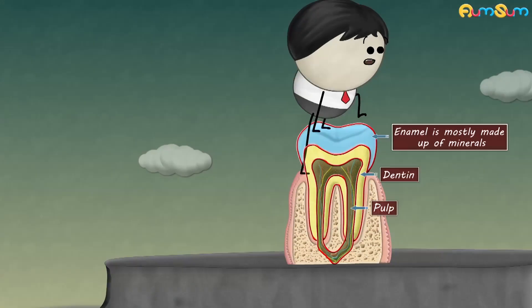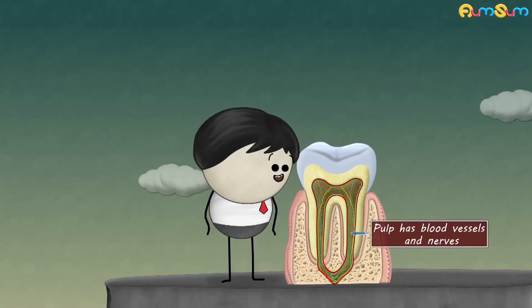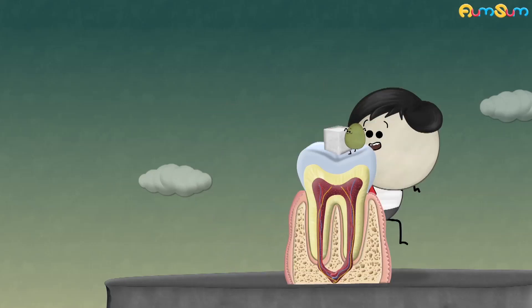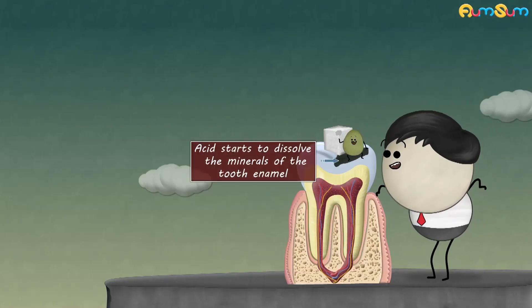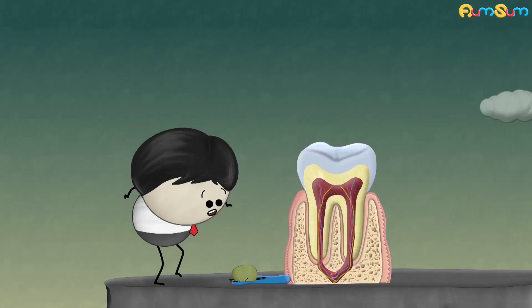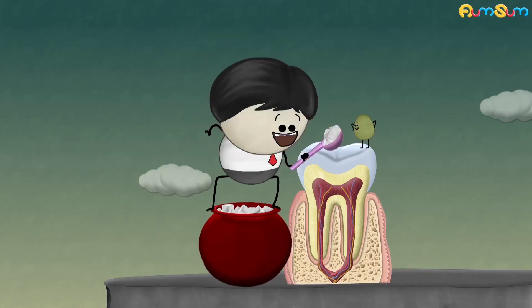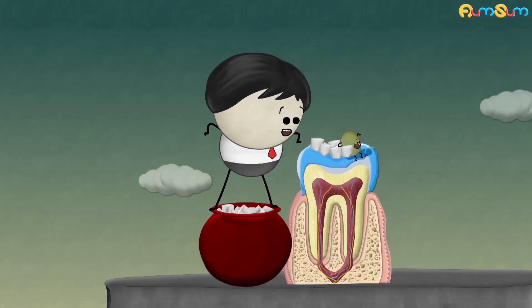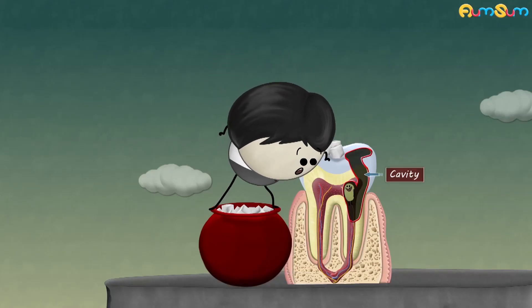Enamel is mostly made up of minerals. Dentin is a layer underlying the enamel. Whereas pulp has blood vessels and nerves. Now, when we eat foods containing sugars, some of these bacteria feed on the sugars producing acid. This acid starts to dissolve the minerals of the tooth enamel, causing tooth decay. Usually, our saliva restores these minerals, thus preventing further decay. But if we continuously eat sugary foods, then our saliva cannot keep up, causing the bacteria to pass into the dentin and then eventually into the pulp, thus creating cavities.